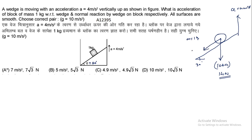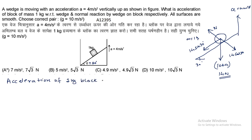तो इस 14 N force को resolve करें तो incline direction में 14 sin30° और normal direction में 14 cos30° आएगा। इन दोनों के बीच surface contact में normal reaction force काम करता है। Acceleration of 1 kg block with respect to wedge = 14 sin30° = 7 m/s²।